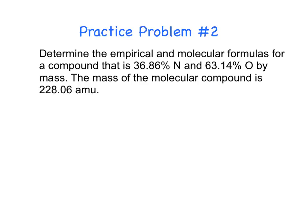Okay. Well, this is the last one, and this is find empirical and molecular formula for 36.86% nitrogen, 63.14% oxygen by mass, and then also find the molecular formula using that molecular mass. Have a great day. Bye-bye.